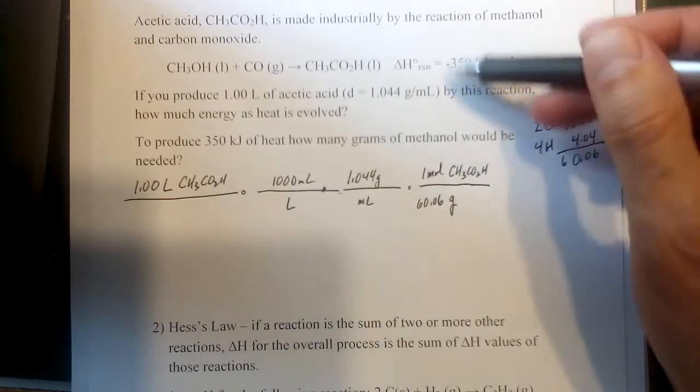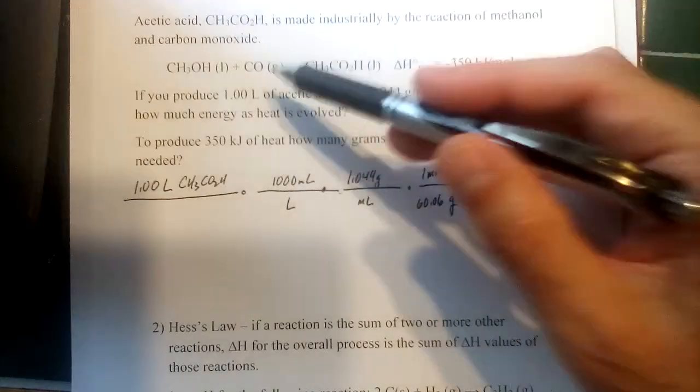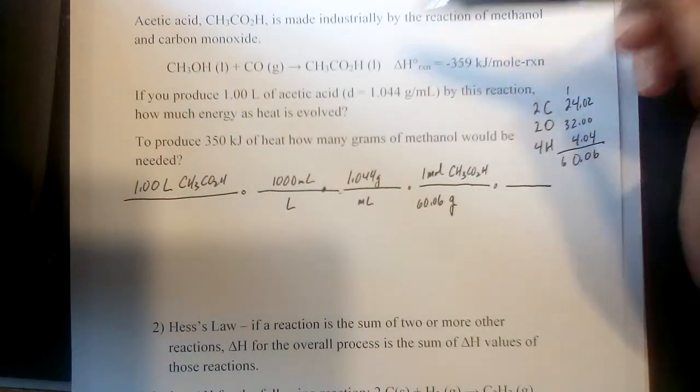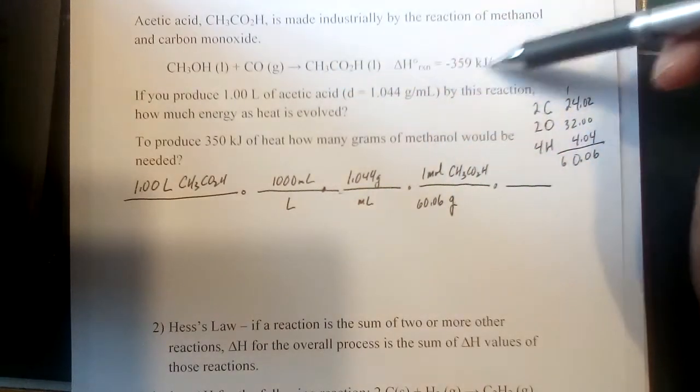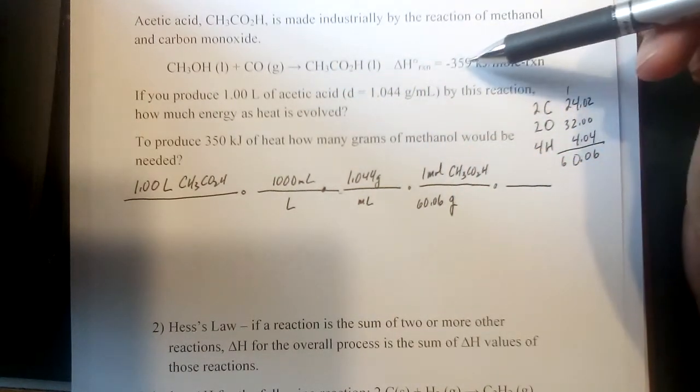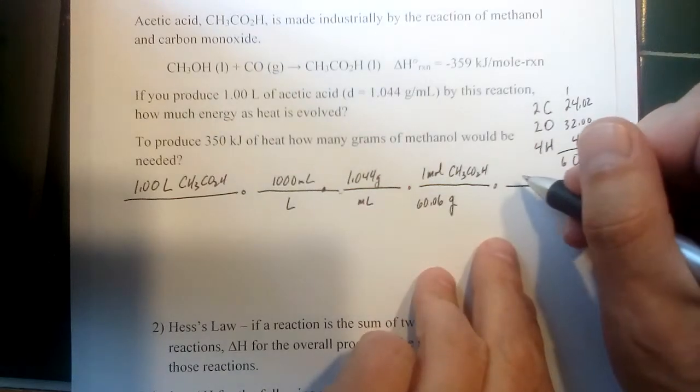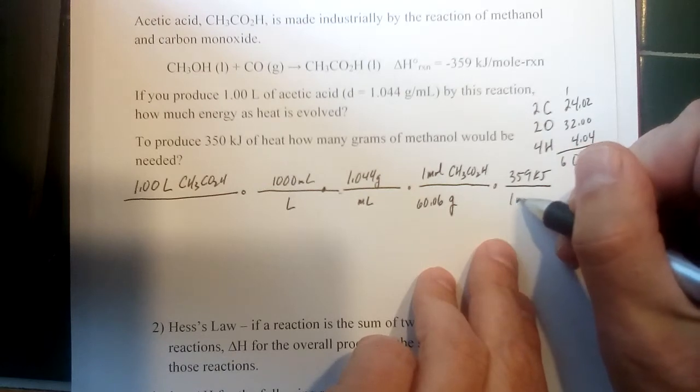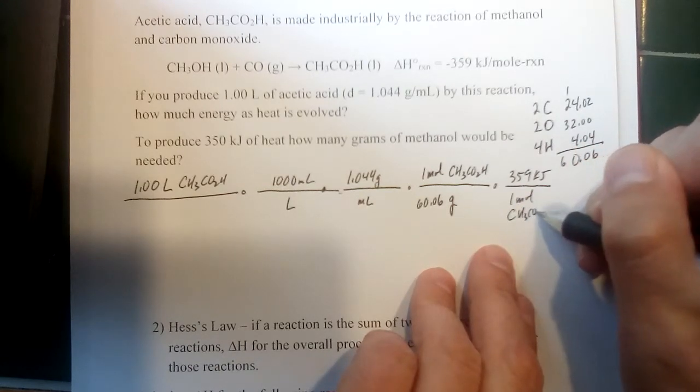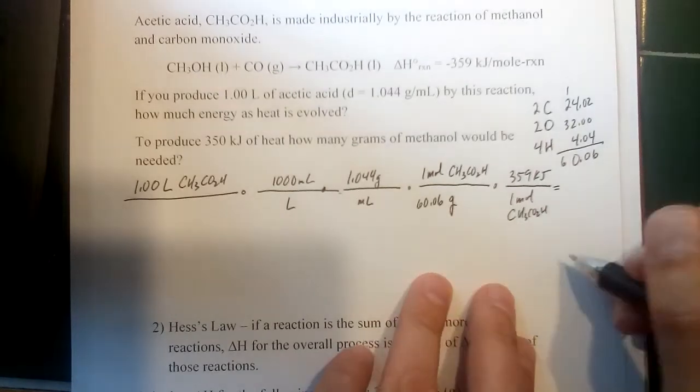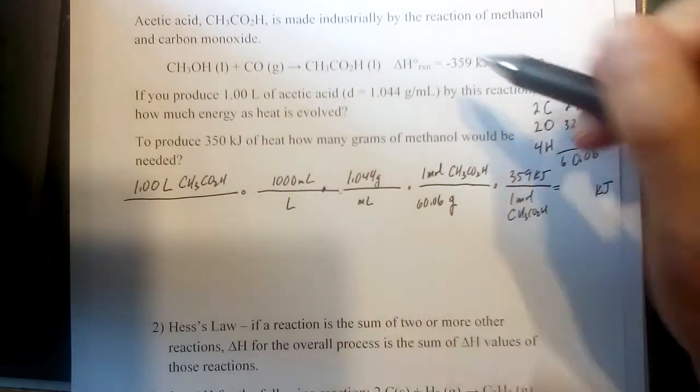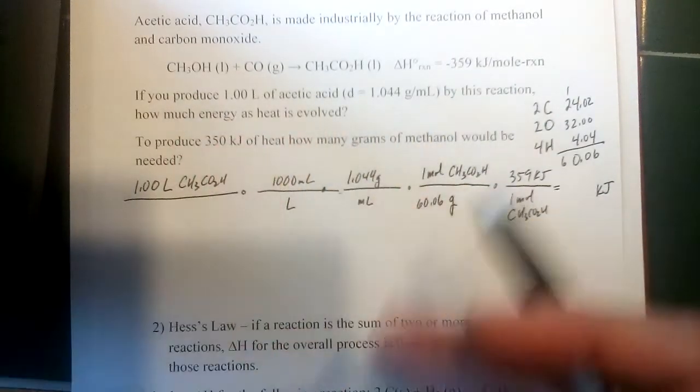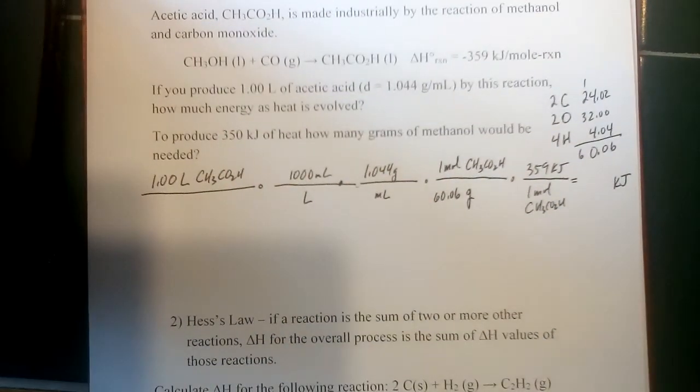Now, when we get to moles, we can use the enthalpy because remember, enthalpy is scaled to moles however they appear in that equation. So in this case, for every mole of acetic acid that's produced, this reaction is going to generate 359 kilojoules of energy. So 359 kilojoules goes on top. One mole of acetic acid is going to go on the bottom. Now this should be a positive number because enthalpy being negative means heat is released. And that's what the problem asks. How much heat is evolved? So evolved and released being synonymous here.